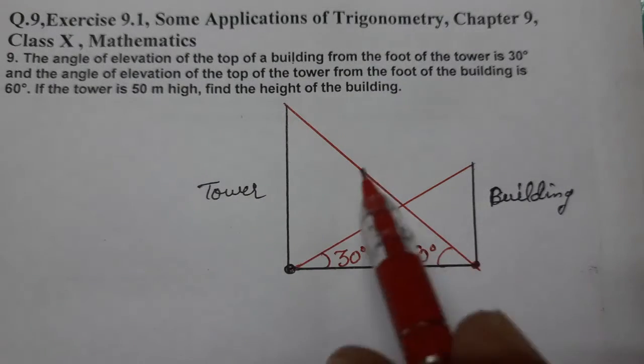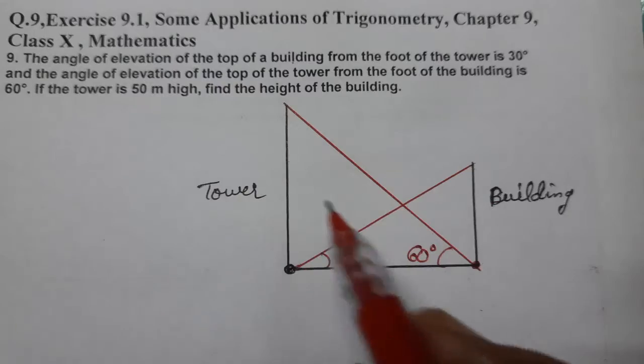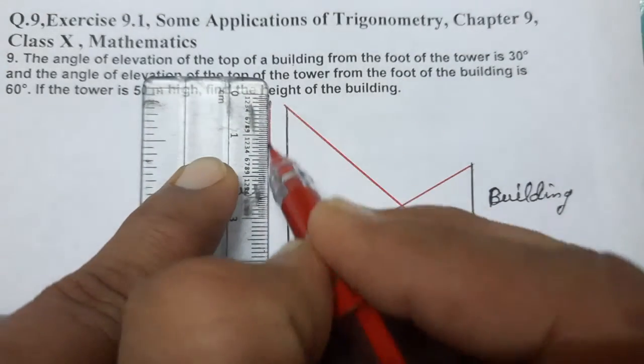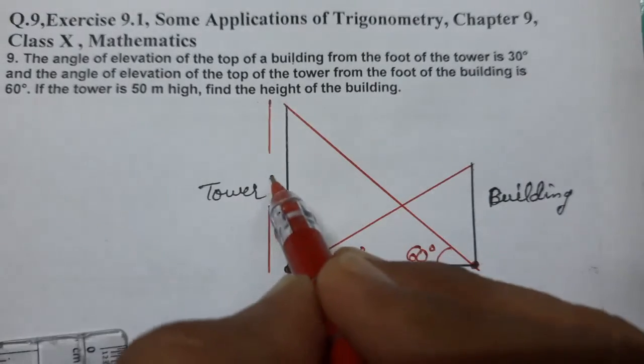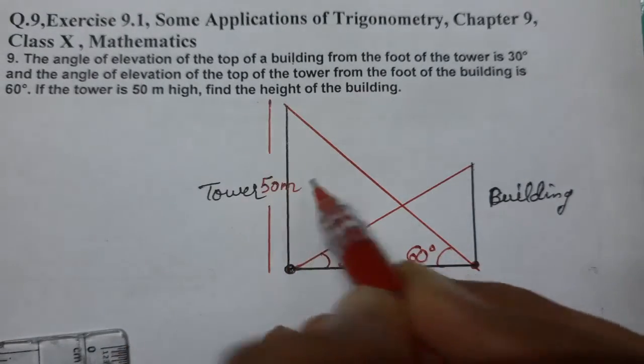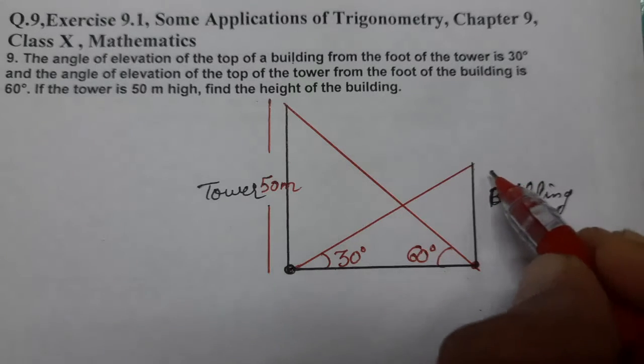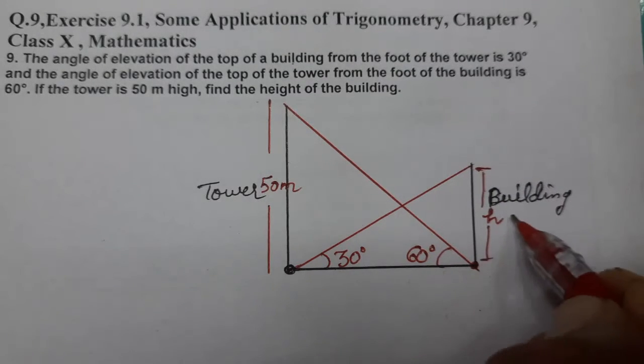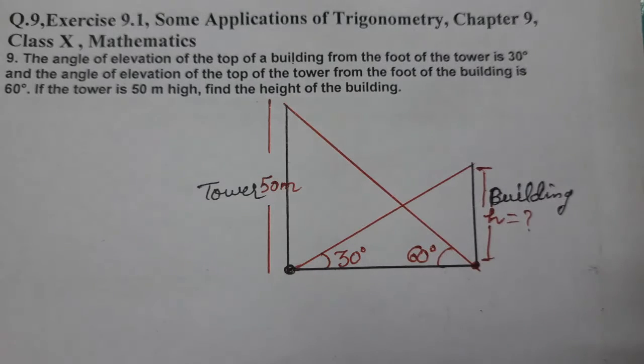This is also given to us: if the tower is 50 meter high, tower ke height hume given hai. Tower ke height kitni hai - 50 meter given hai, 50 meter. We need to find the height of building. Building ke height hume nikal ni hai. H maan lete hain building ke height ko h. Ye h hume nikal ni.